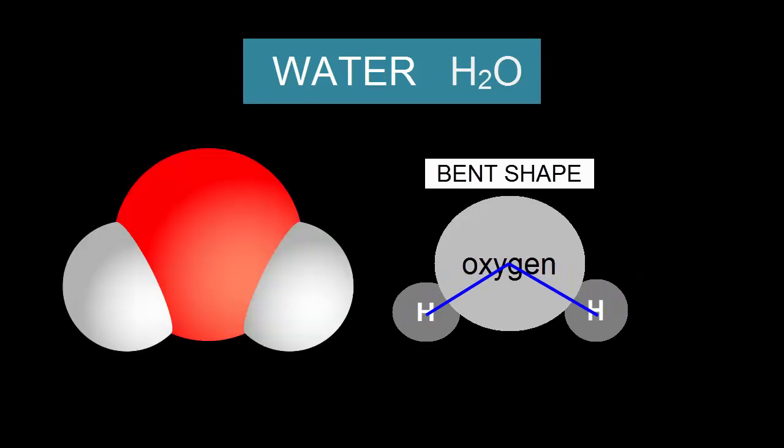To understand why water has this shape, we need to look even closer, inside the individual atoms, and study the atomic bonds. First, let's review the components of a single atom.